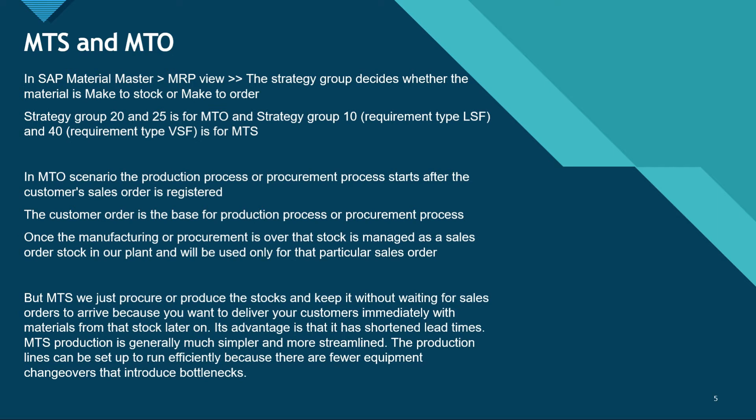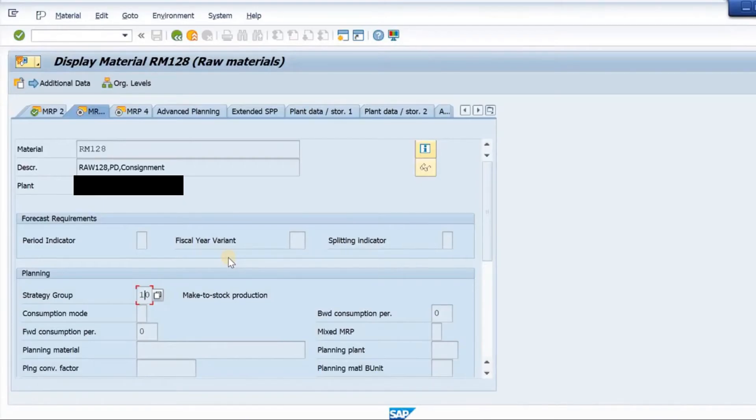For MTS, we procure and produce the stock and keep it without waiting for any sales order. We want to deliver the product to the customer immediately. Its advantages are shortened lead times and it is simpler and more streamlined compared to MTO. The production lines can be set up to run efficiently because there are fewer equipment changeovers that introduce bottlenecks.